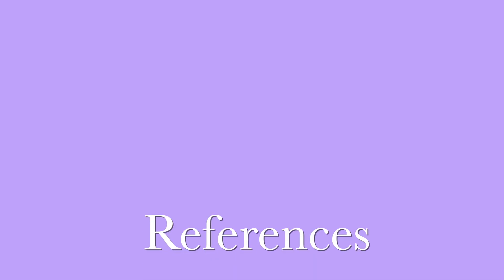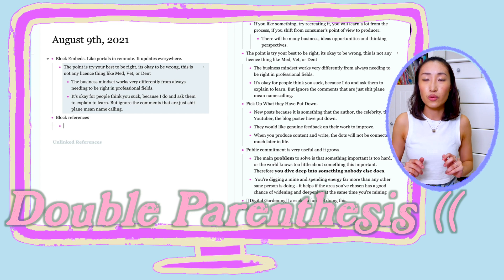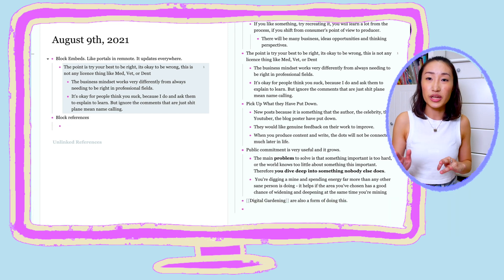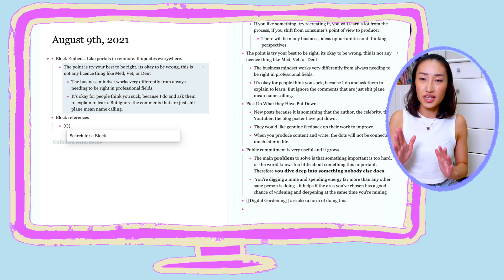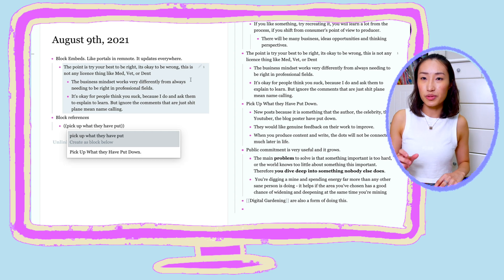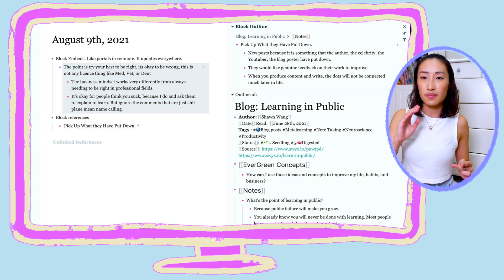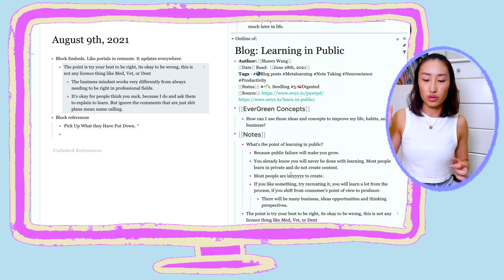In block references, I can search through my whole database by pressing double parentheses and typing in a keyword — I would see all my bullet point blocks in this search. When I click on a block, a random code will be generated and this becomes the block reference code that can bring me back to the original source.